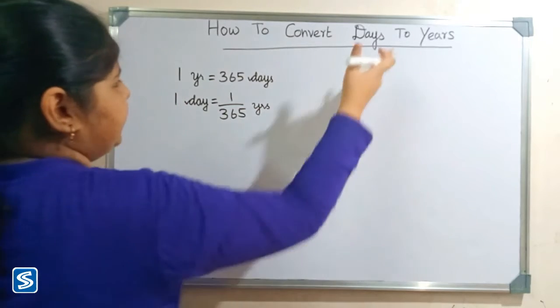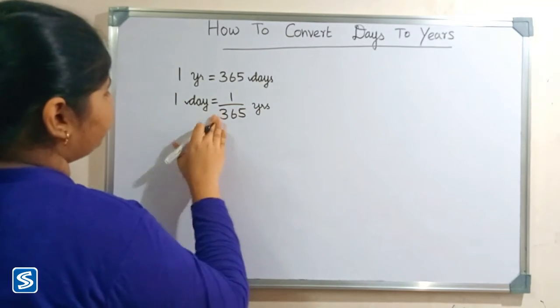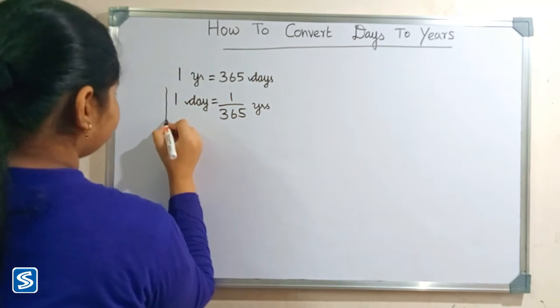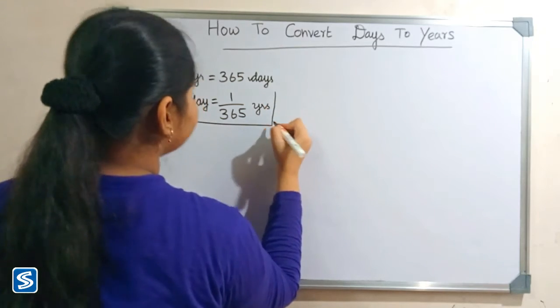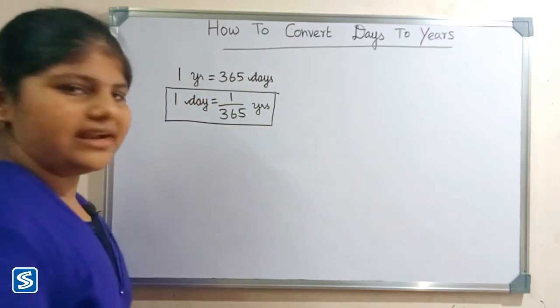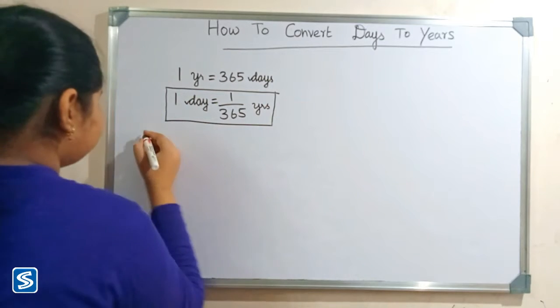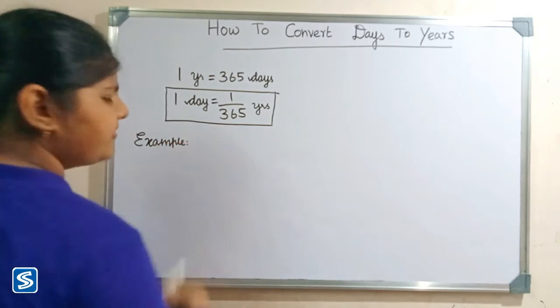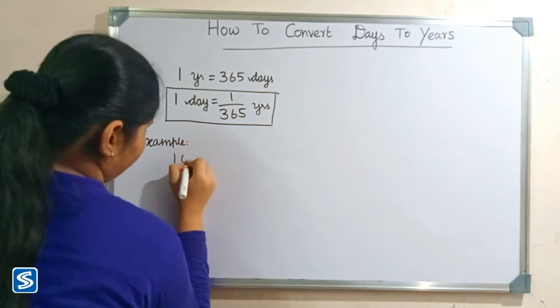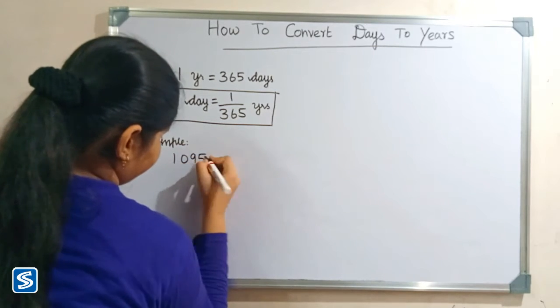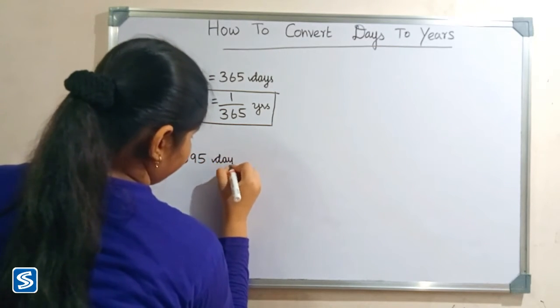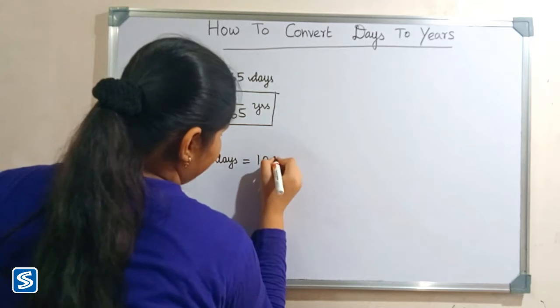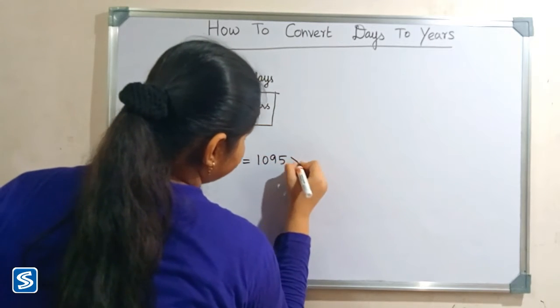So the formula for converting days to years is one day is equal to 1 by 365 years. Now we will take some examples. For example, we can take 1095 days. 1095 days can be written as 1095 multiply one day.